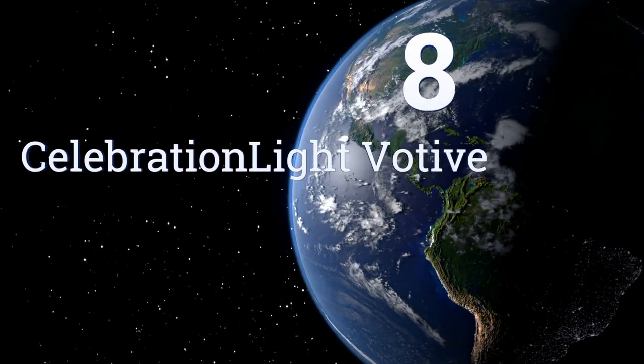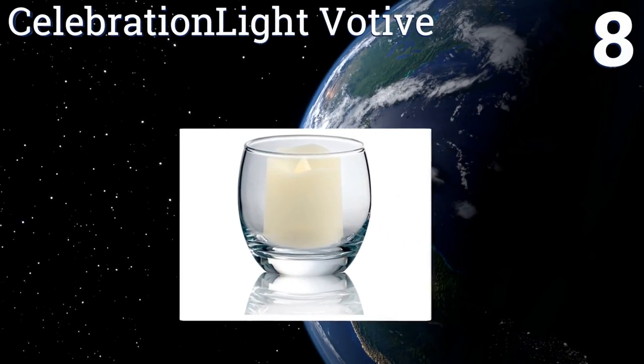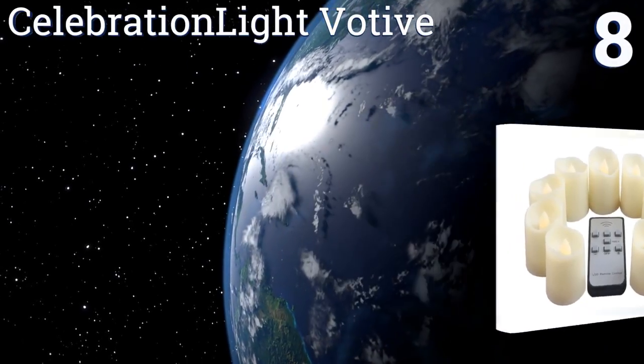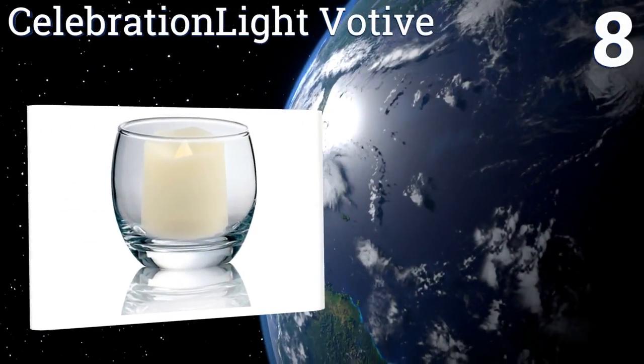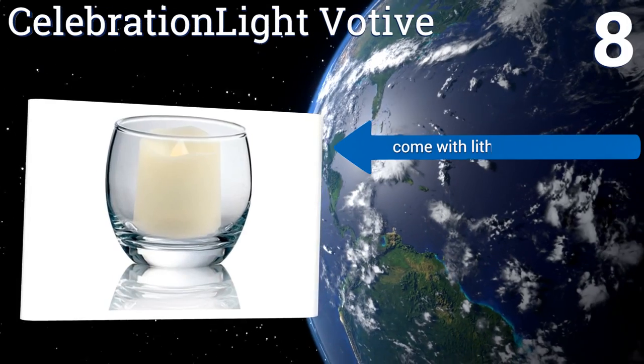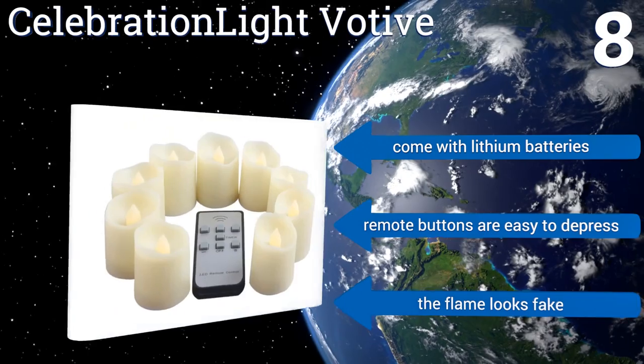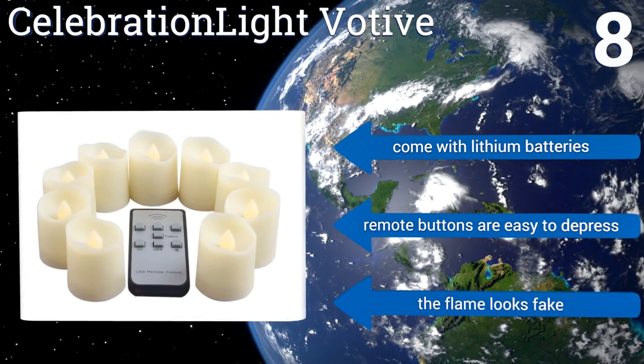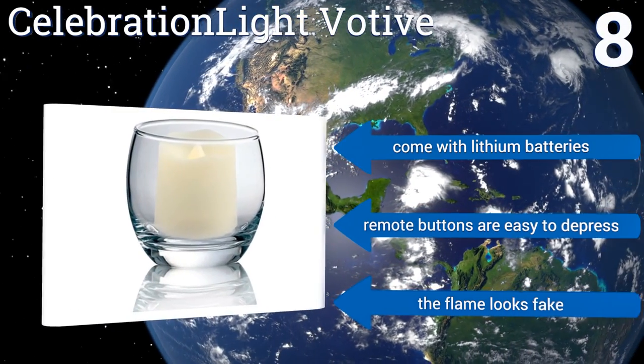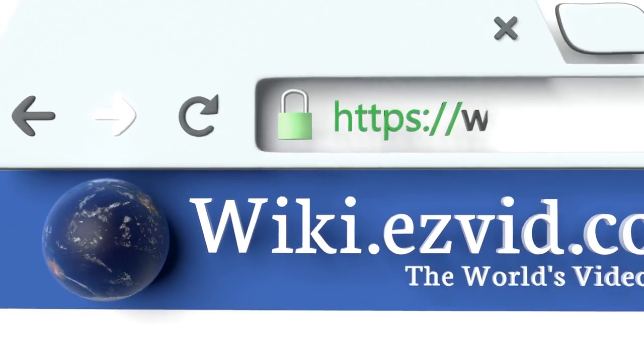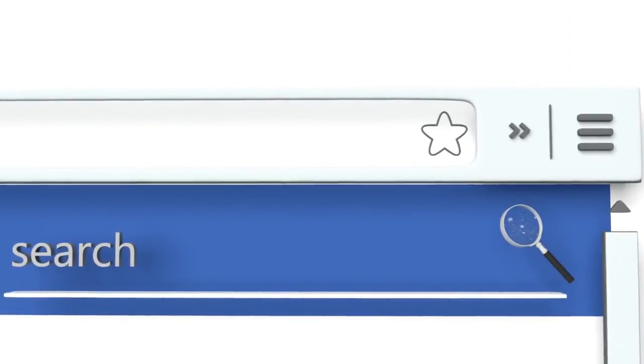Coming in at number eight in our list, the delightful Celebration Light votive tea lights will look lovely when added to a wall sconce or lining your windowsills. Their small size makes them easy to put inside a glass if you want to get creative with your table decor. They come with lithium batteries and the remote buttons are easy to depress, however the flame looks fake.